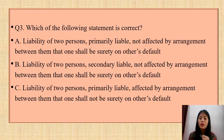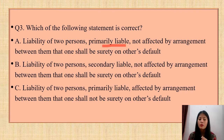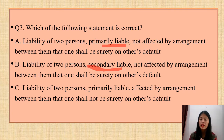Question 3 says: 'Which of the following statements is correct?' Option (A): Liability of two persons primarily liable is not affected by an arrangement between them that one shall be surety on the other's default. Option (B): Liability of two persons secondarily liable is not affected by such an arrangement. Option (C): Liability of two persons primarily liable is affected by such an arrangement that one shall not be surety on the other's default. What is the correct option?